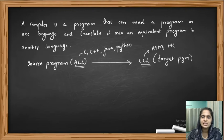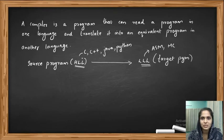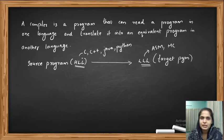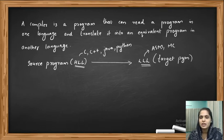Now why do we need this translation? It's because we write programs in high level language because it is much easier to understand, and high level languages resemble our normal English language. But our computer can understand only machine language or machine code. So the compiler translates those high level language programs into machine-understandable low level languages such as machine code or assembly code.